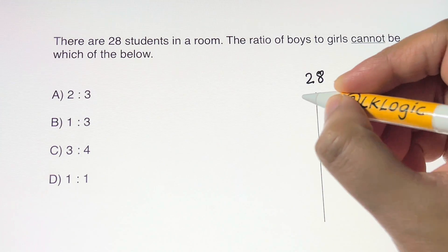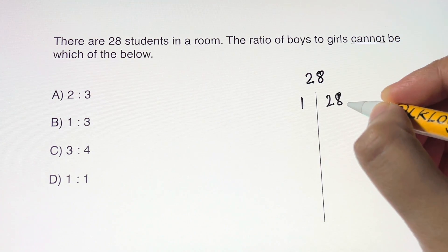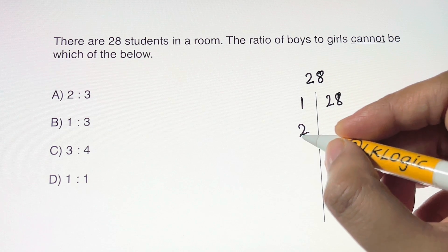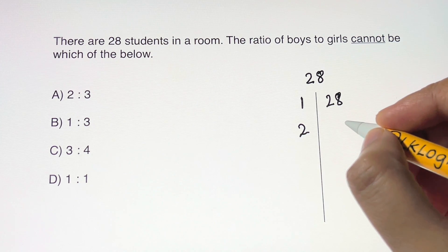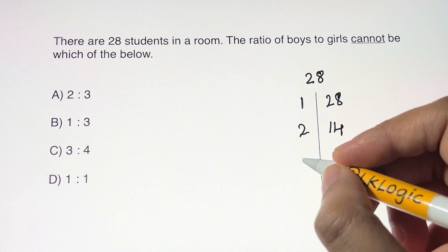28 divided by 1 is 28. The next number after 1 is 2. 28 is divisible by 2. 2 times 14 is 28, or 28 divided by 2 is 14. Next is 3.